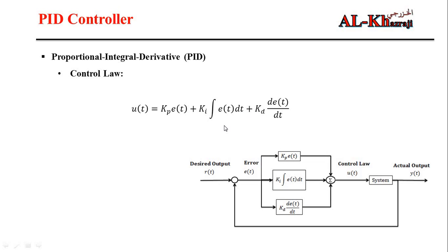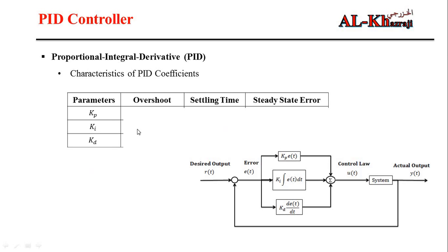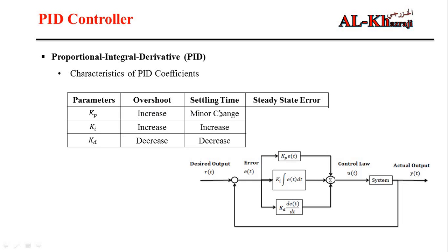The control law of the PID controller is: Kp multiplied by the error, plus Ki multiplied by the integral of the error, plus Kd multiplied by the derivative of the error. In MATLAB, there is a simple command called 'pid' to design this controller. To select Kp, Ki, and Kd, we need to understand how these parameters affect overshoot, settling time, and steady-state error. Kp and Ki increase overshoot, while Kd decreases it. Ki increases settling time and Kd decreases it. Kp decreases steady-state error, Ki eliminates it, and Kd has little effect on steady state.